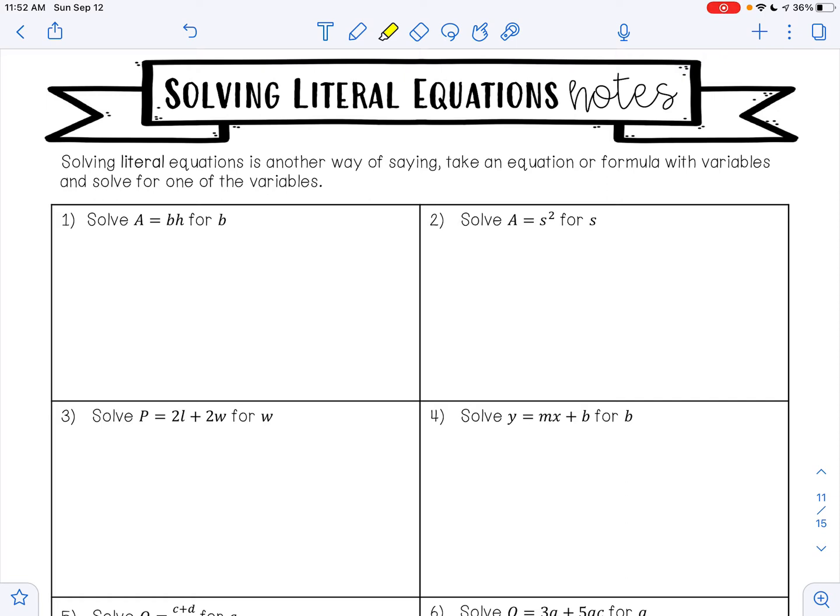So if we look at example A, it says solve A equals BH for B. Just because this has letters in it doesn't make it harder. It's just we're taking the same inverse operations that we did earlier in this unit and applying it to a formula. Just because it has letters, you're going to use the same things that you already know. Except instead of getting a number for an answer, your answer will still contain variables and that is okay.